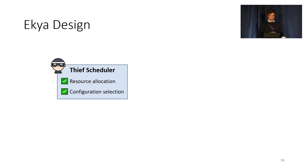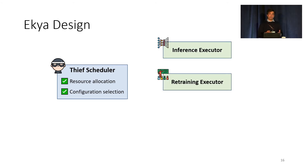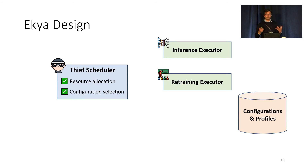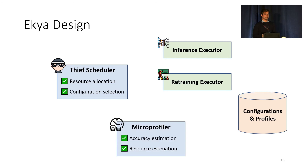We use these insights to design our system, IKEA, which has four key components. First is the resource allocator, called the T-scheduler, which handles GPU time allocation and selects the configurations for training and inference. Then we have the executors, which actually run the inference and retraining jobs. We also have a pool of configurations with their corresponding resource-accuracy profiles stored in a database. Finally, we have a micro profiler, which produces accuracy-resource estimates that guide the T-scheduler.